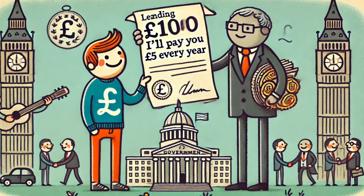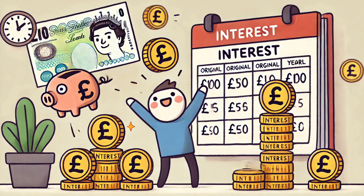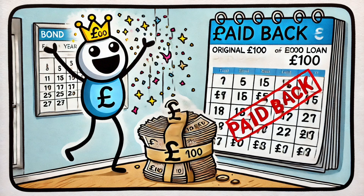The easiest way to get your head around exactly what a bond is, is to think about it as a loan that you are giving to the issuer of the bond. Let's assume that the issuer of a bond is a government. You lend money to the government by buying a bond, and in return, the government promises to pay you regular interest. It's a bit like having rent on your money.